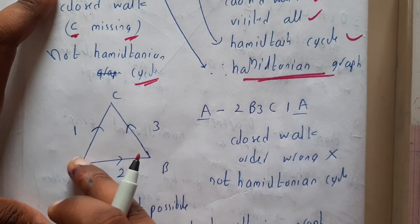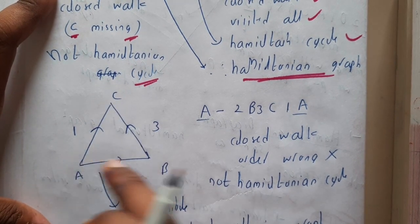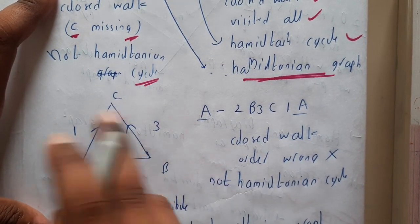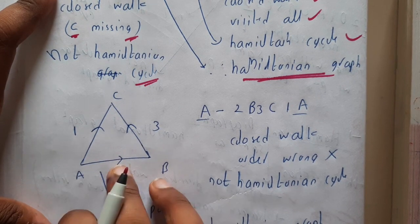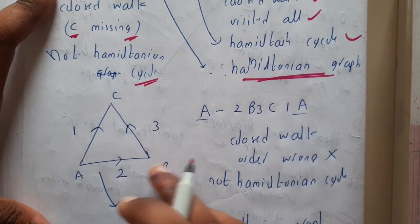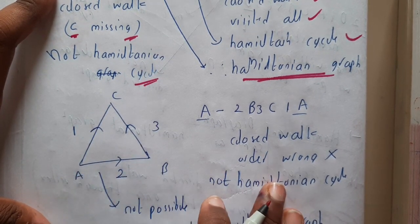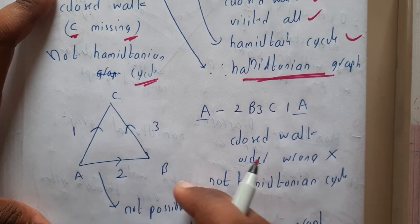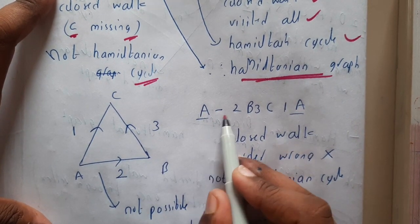That is one of the issues here. Anywhere you start, you cannot come back because the directions are making an issue. That is the reason why you can say by observing only it is not a Hamiltonian graph. I think I have written it wrong.